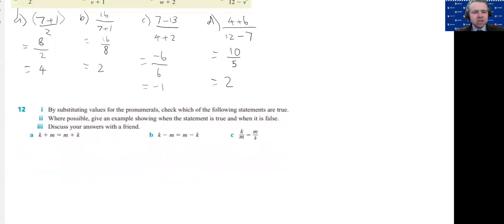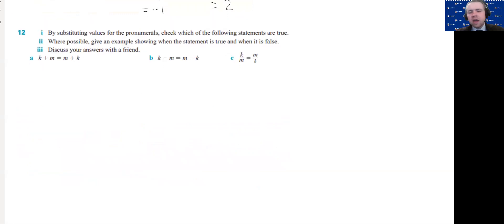Now for this second question here we're going to be coming up with our own values and we're going to be testing whether these statements are equal. So we've got two algebraic expressions with an equal sign in between, we call that an equation, and we're going to test whether this equation is true, that is that the left side of the equation is equal to the right side. So by substituting values for the pronumerals. So what we're going to do is we're going to give a value for each of these.